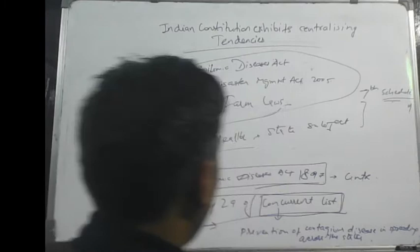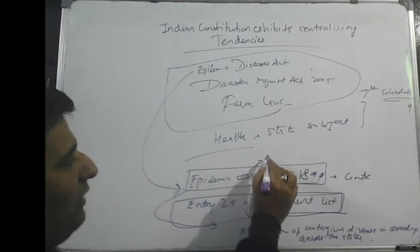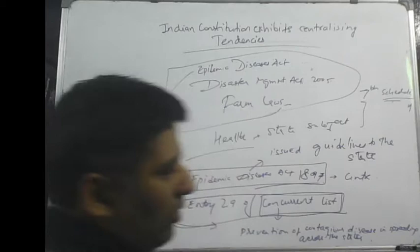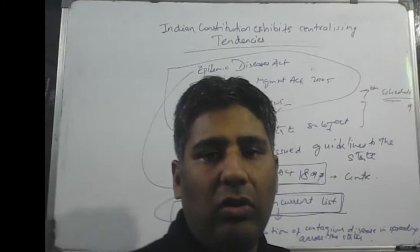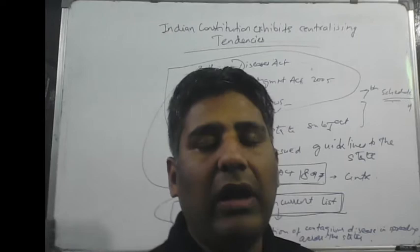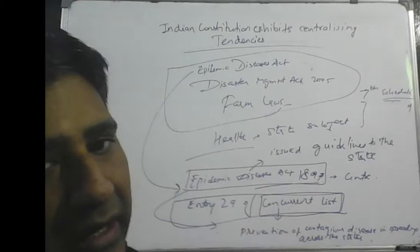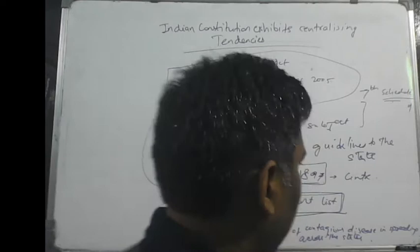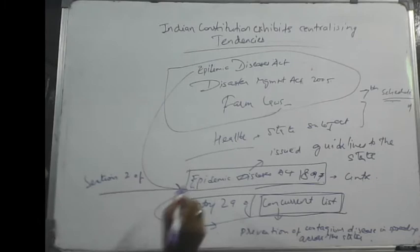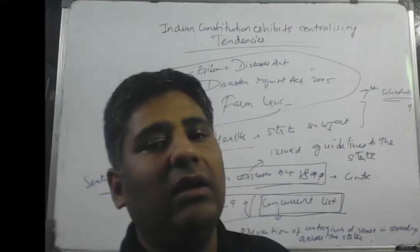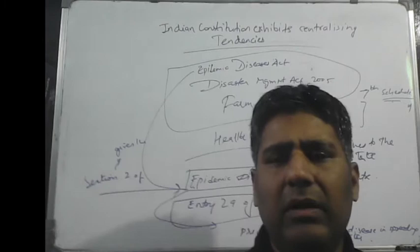Using this law — the Epidemic Diseases Act 1897 — the center has issued relevant guidelines to the states. During the COVID-19 pandemic, the center issued various guidelines to the states. There is Section 2 of the Epidemic Diseases Act which gives power to the center to issue relevant guidelines to the state regarding what action needs to be taken to prevent the spread of the contagious disease.